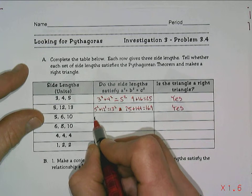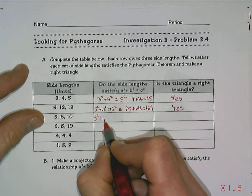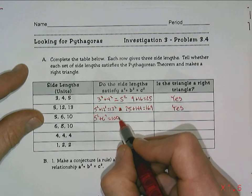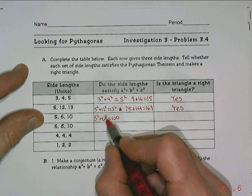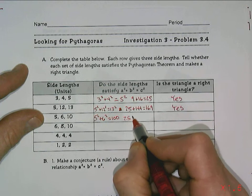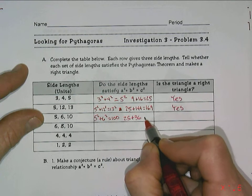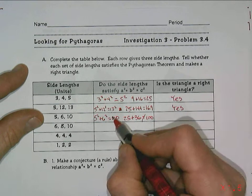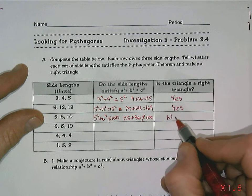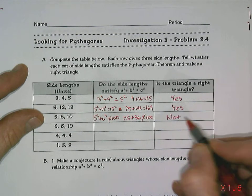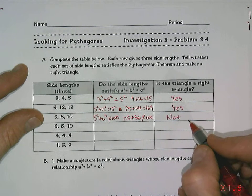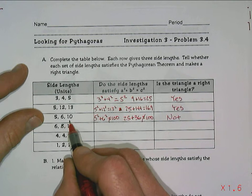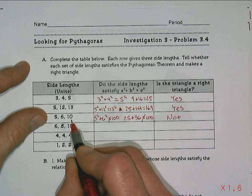We have another one: 5 squared plus 6 squared, does that equal 10 squared? That would be 25 plus 36, and I don't think that equals 100. So this one is not a right triangle.